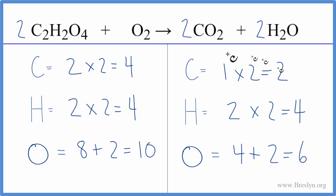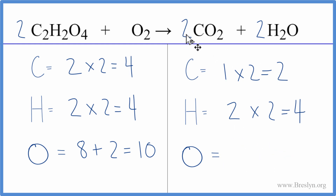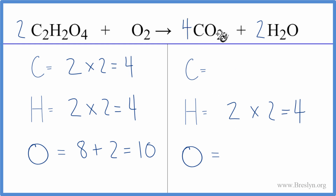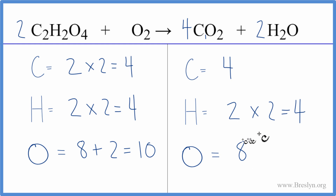Let's balance the carbon and see if that fixes the oxygen. Instead of two, I'll put a four in front of the CO2 — one times four is four, so the carbons are balanced. Then two times four is eight, and one times two is two, giving us ten oxygens. This equation is balanced.